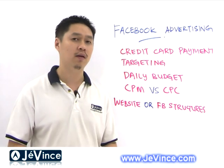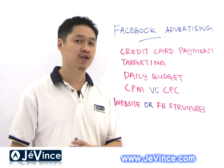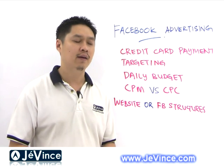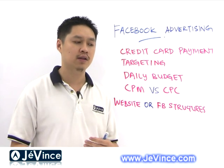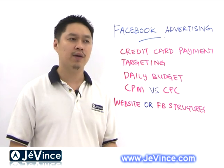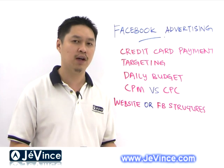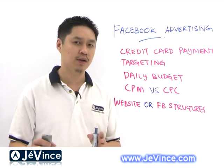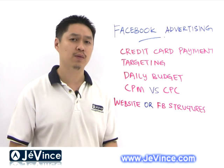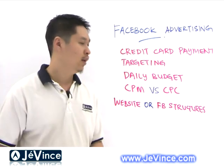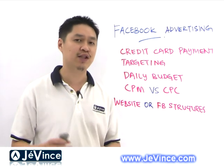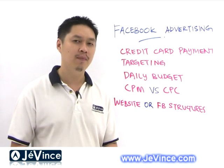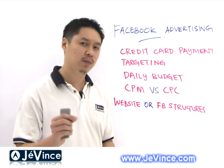You may want to notice what we call CPM versus CPC. CPM is cost per impression, which simply means every time the impression appears on Facebook, what's the rate Facebook is going to charge you based on impression. Cost per click is every time someone clicks on that ad, you're charged based on the number of clicks.